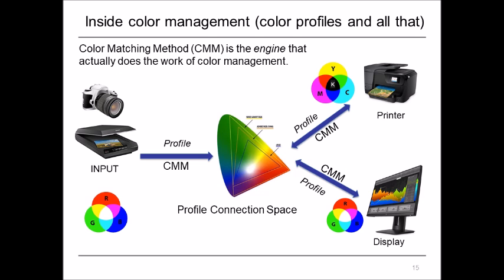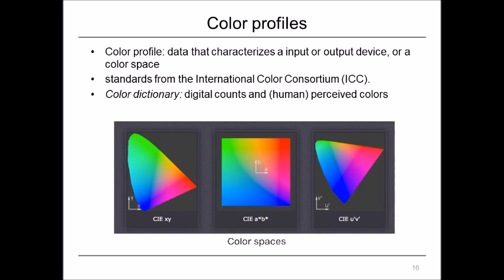If that's how we evaluate color accuracy, how do we manage color? Here's a look inside: we use color matching methods and profiles to transform from input signals — scanners, cameras, and so forth — to common color spaces, in order to provide matching or controlled color images on displays, printers, and so forth. Color profiles are important — those are the data sets that characterize the input and output devices or the color spaces into which the signals are transformed. These are standards from the International Color Consortium and are often called ICC color profiles.